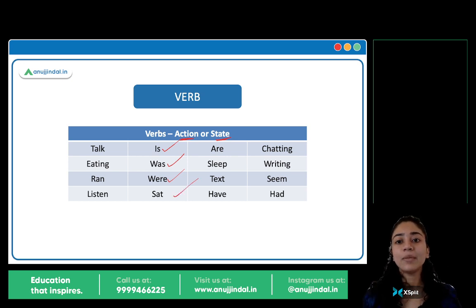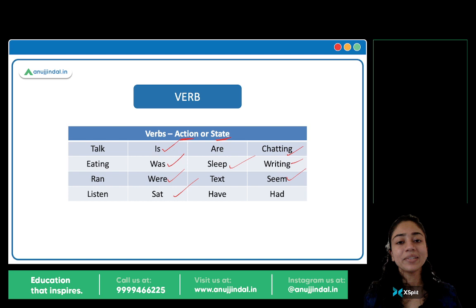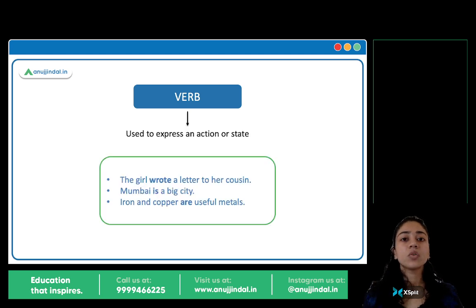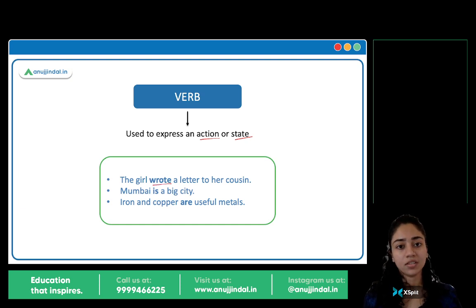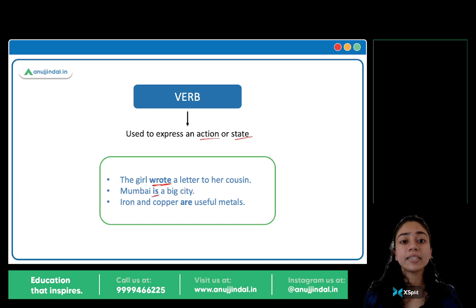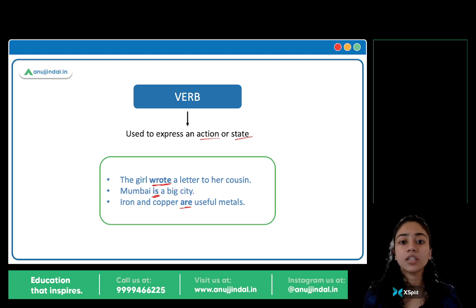Sat, sleep, chatting, writing, seem — 'He seems sad', 'You seem sad' — toh seem verb hai. Any word which is used to describe an action or a state is a verb. 'The girl wrote a letter to her cousin.' Wrote action hai — verb hai. 'Mumbai is a big city.' Is is a state — verb hai. 'Iron and copper are useful metals.' Ar bhi verb hai. I hope this is clear.